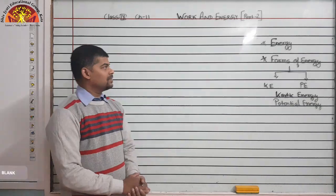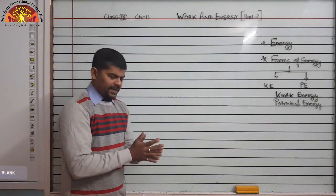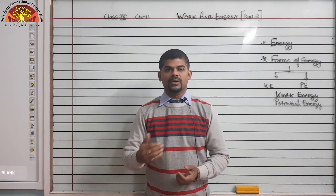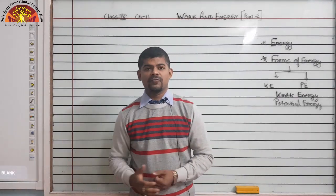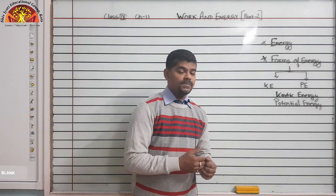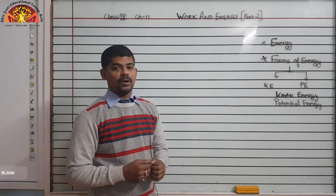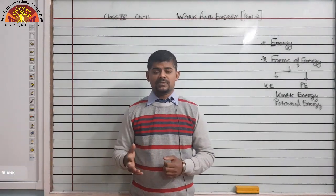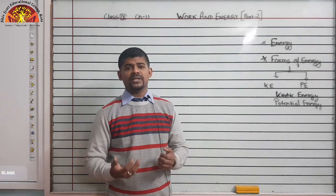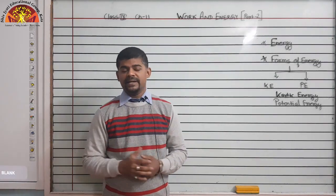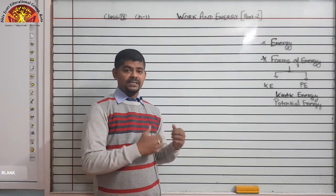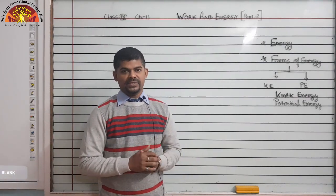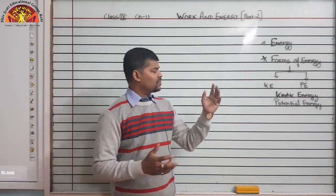Students, we come to the topic of energy. In Part 1, we have already discussed about work — what is work and what is the formula of work done. Now in this part, we will discuss about energy and the forms of energy. There are two types of energy we will discuss here: potential energy and kinetic energy. We will also see the derivation of potential energy and kinetic energy in this video.